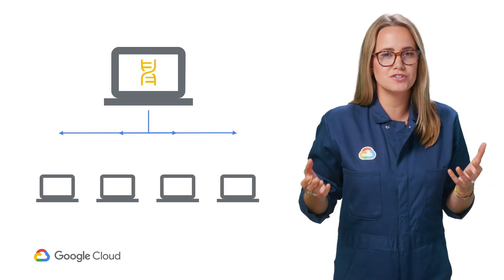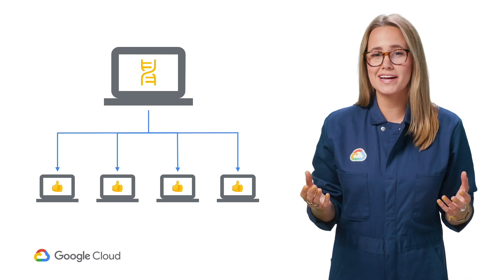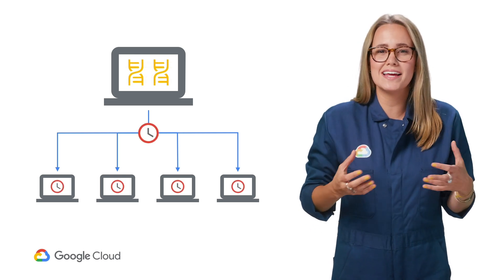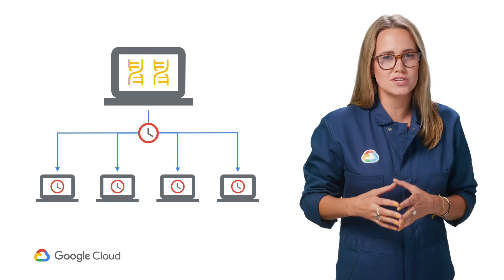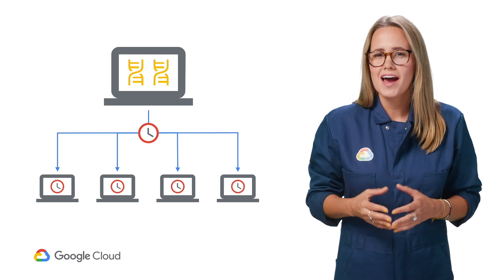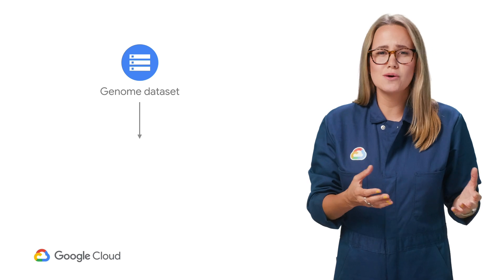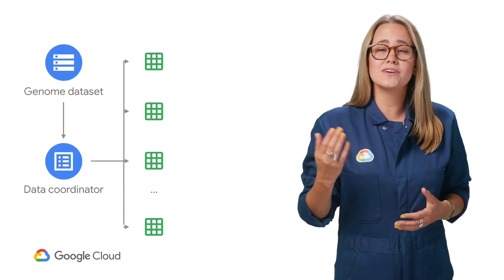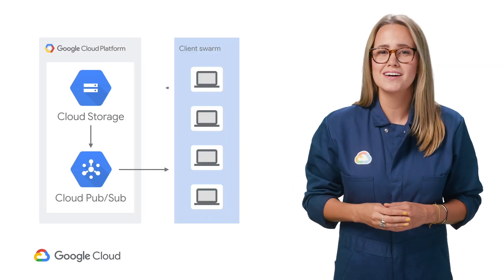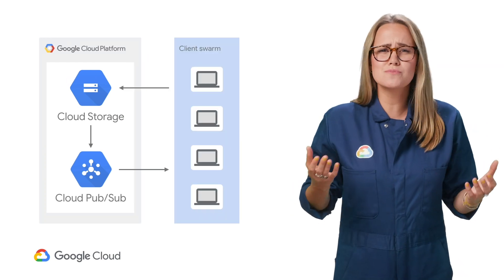Let's say you're a biotech company, and your main product is software that works with DNA across multiple distributed machines. Everything is great, but whenever you add a data set, your clients are stuck waiting and waiting to begin computation. You've checked your architecture, and it's pretty straightforward: a new data set comes in, gets divided, and uploaded to Cloud Storage, triggering a PubSub alert for your clients to start computing. So what's the problem here?